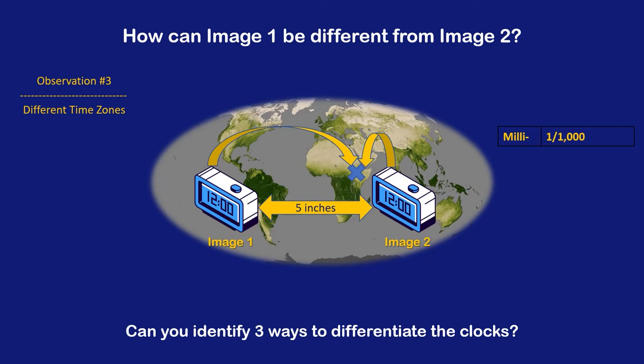Next, we divide the time zone into 1,000,000 parts, which equals 5.5 feet. So we are getting closer to having our clocks in two different time zones when they are five inches apart. But currently, our micro time zones are still too wide for our situation.